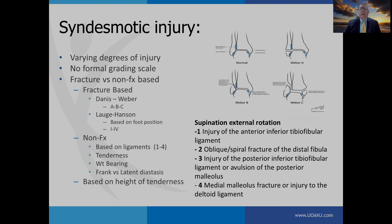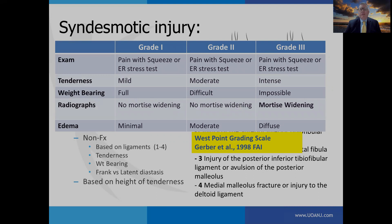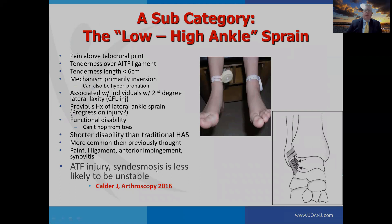Syndesmotic injury is generally graded based on fracture and non-fracture injury. In fracture cases involving syndesmotic injury, we use the Dennis Weber and Lauge-Hansen classification systems. In non-fracture injury, there are a couple of purported scales — the West Point receives some publicity, but there's no real consensus on grading scales. Using mild, moderate, or intense tenderness, weight-bearing status, or whether there's frank or latent diastasis seems somewhat arbitrary. I just don't think we have a real good grading scale for syndesmotic injury.